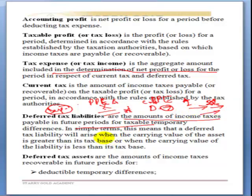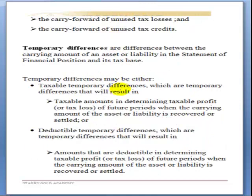In simple terms, a deferred tax liability will arise when the carrying value of an asset is greater than its tax base. A deferred tax asset may arise when the carrying value is less than the tax base. Deferred tax assets are amounts of income taxes recoverable in the future for deductible temporary differences, carry-forward of unused tax losses, and carry-forward of unused tax credits.